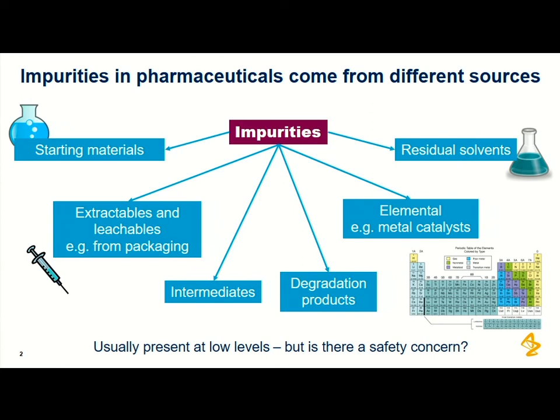The key thing we want to ask as toxicologists is: is there a safety concern? Mutagenic carcinogens are probably one of the highest risk types of chemicals we want to look at. AstraZeneca and GSK did a review of about 300 publicly available pharmaceutical synthetic routes, and only one of those routes was actually able to avoid using any mutagenic carcinogens. So practically, it isn't possible to avoid them — we really need to manage and control mutagenic impurities. That was the basis behind developing the M7 guidance document.